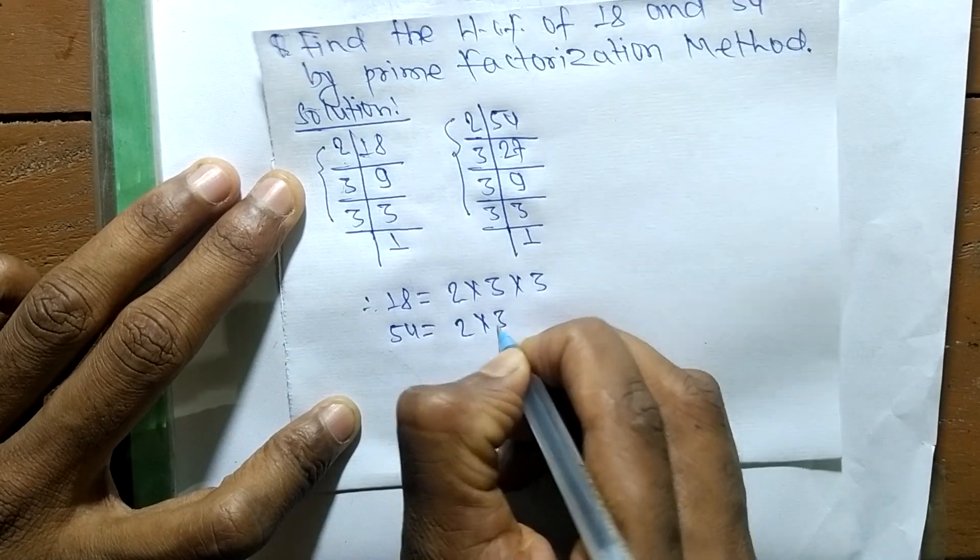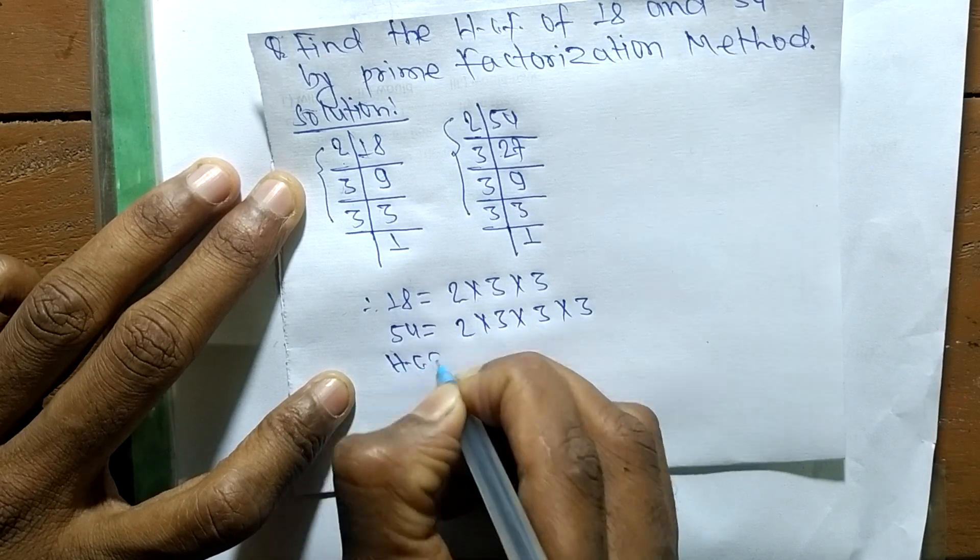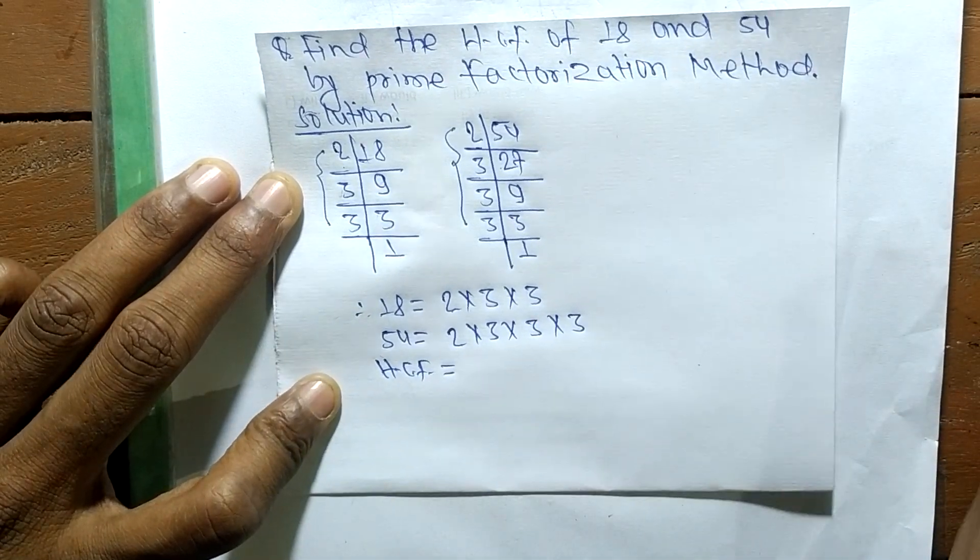becomes 2 times 3 times 3 times 3. So its HCF is equal to, now we have to find out